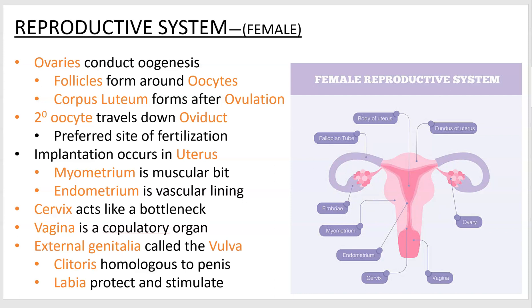The vagina, contrary to popular belief, is not an external structure — it's an internal tube, a little tunnel inside the female. It is also a copulatory organ; it functions in reproduction and is where sperm are deposited. You may have heard it called a birth canal, but that's similar to how the penis acts as a urinary structure — it's because it's just kind of in the way. Its primary purpose is for sex.